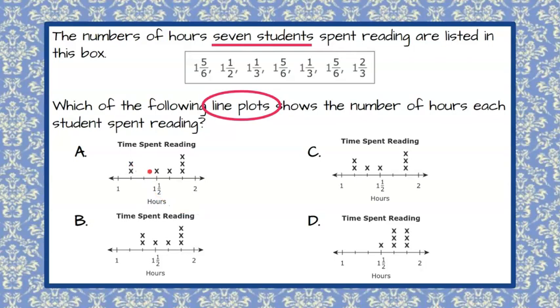Each x on these line plots represents one student's number of hours reading. So here we go: one, two, three, four, five, six, seven, so A could be the answer. One, two, three, four, five, six, seven for C. One, two, three, four, five, six, seven for D. So all four of these line plots have seven pieces of data and all could represent this box of data.